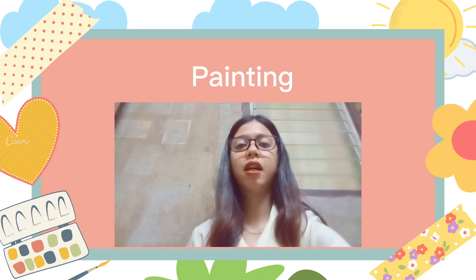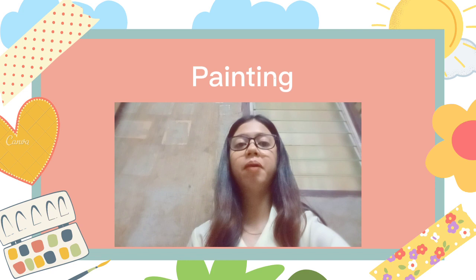Painting is the application of paint or another substance to a solid surface, most commonly a canvas. A paintbrush is widely used to apply paint or other forms of color. Artists, on the other hand, employ a variety of tools such as sponges, spray paint, and even knives.